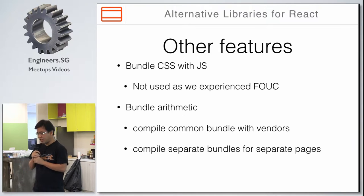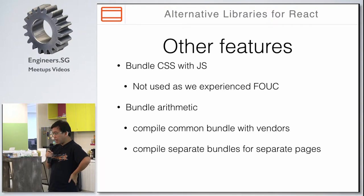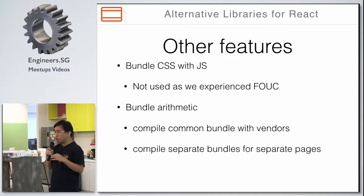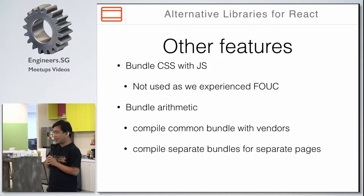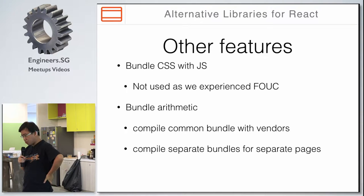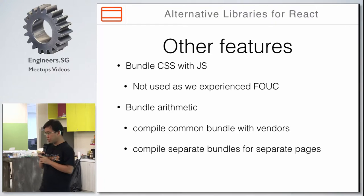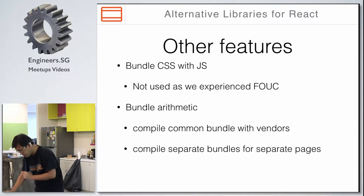Other features of JSPM: you can bundle CSS to JS, which is out of the box — with Webpack I think you need a module or plugin to get that to work. However, this is a feature we didn't use because we had a flash of unstyled content when you bundle your CSS assets with JavaScript, since the plain HTML is unstyled while waiting for the JavaScript bundle to load. Another feature is bundle arithmetic, where you can do plus and minus operations.